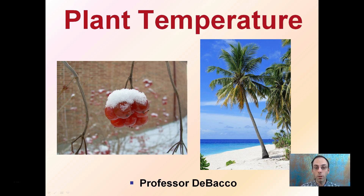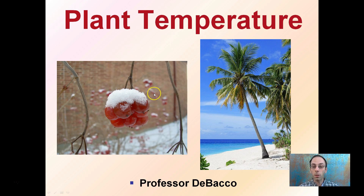Looking at plant temperature, certain plants are going to have different preferences for different temperatures, but for the most part, most plants like consistent conditions within a range. Typically, if plants are too cold, they will slow down their metabolic rate. Plants have that ideal temperature, but even it can get too hot for plants that live in tropical environments.